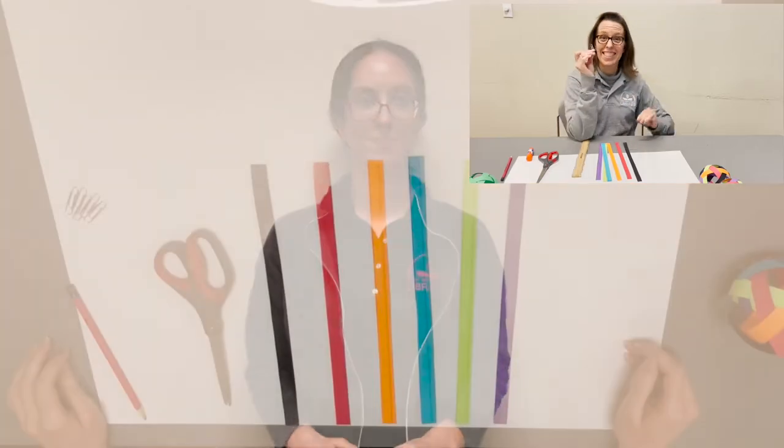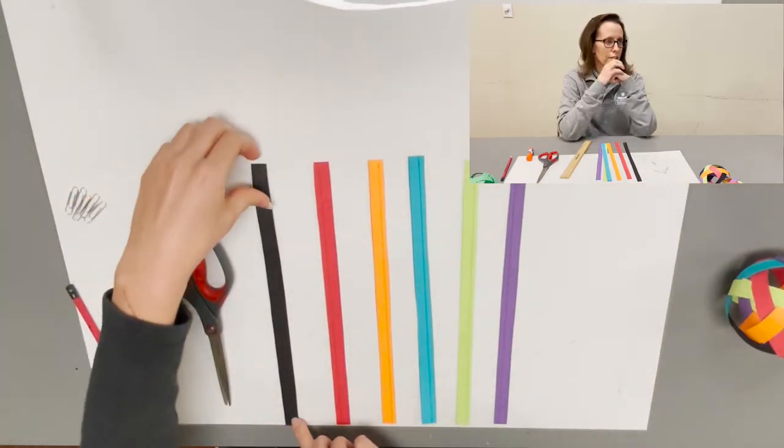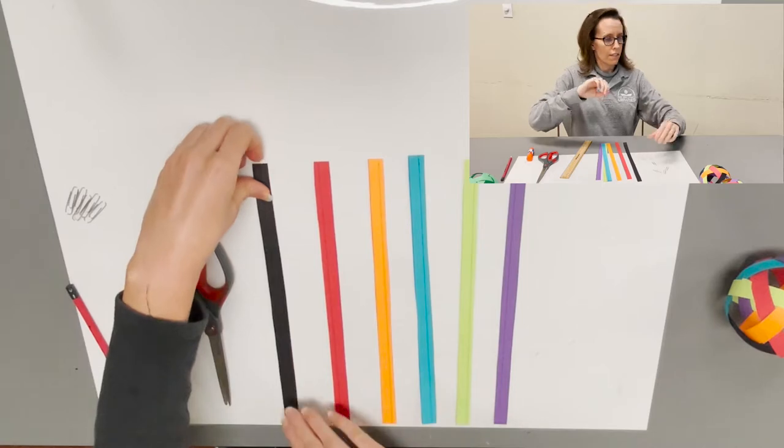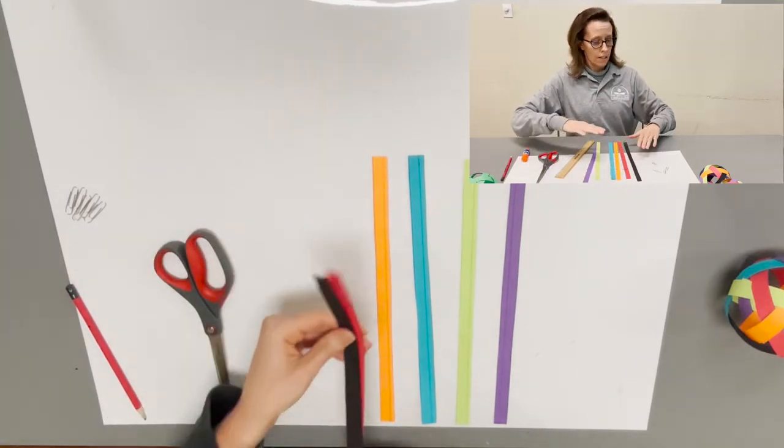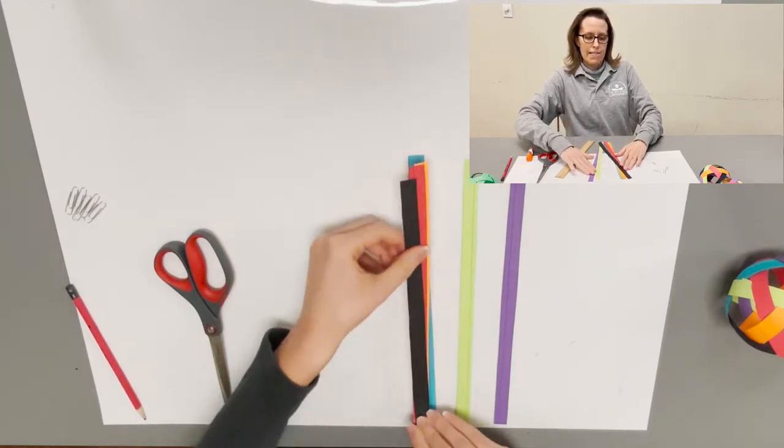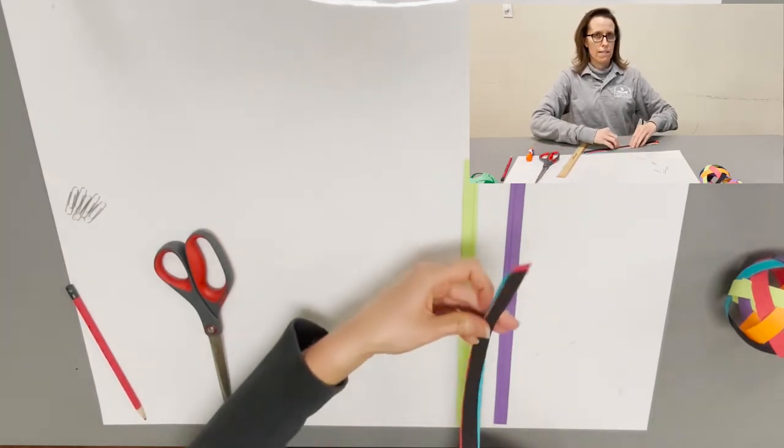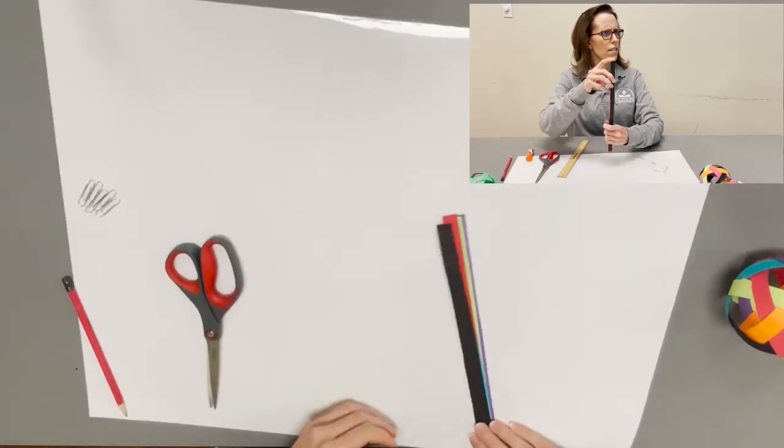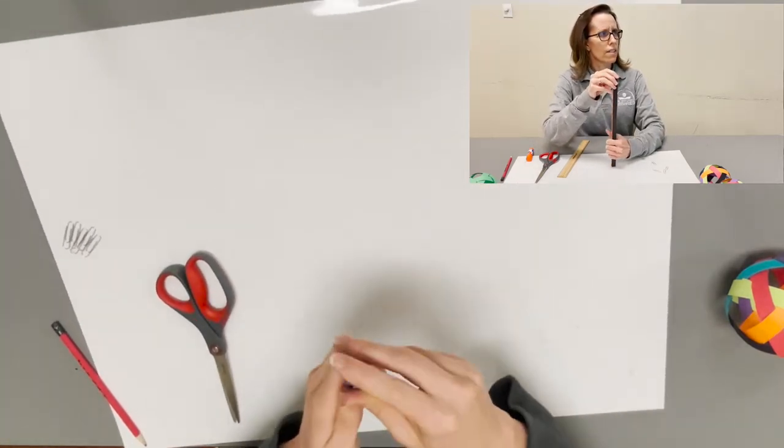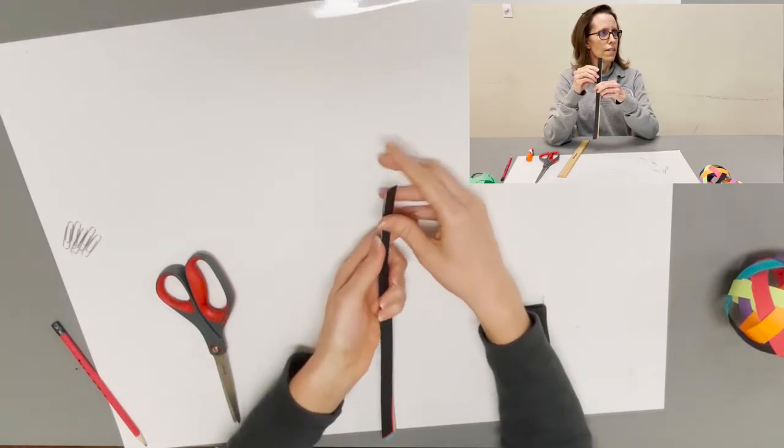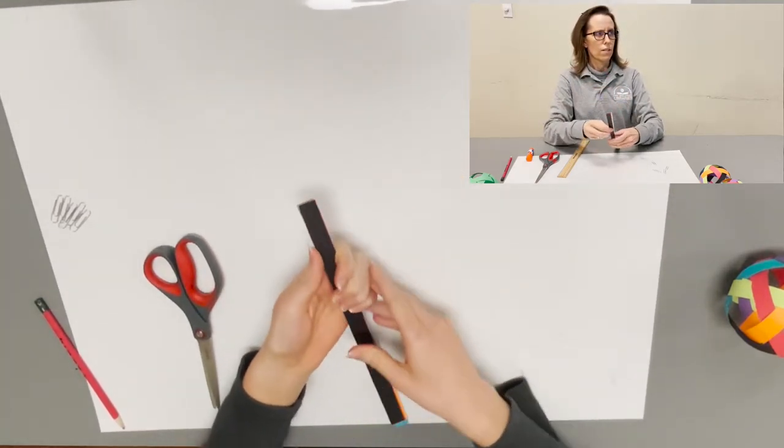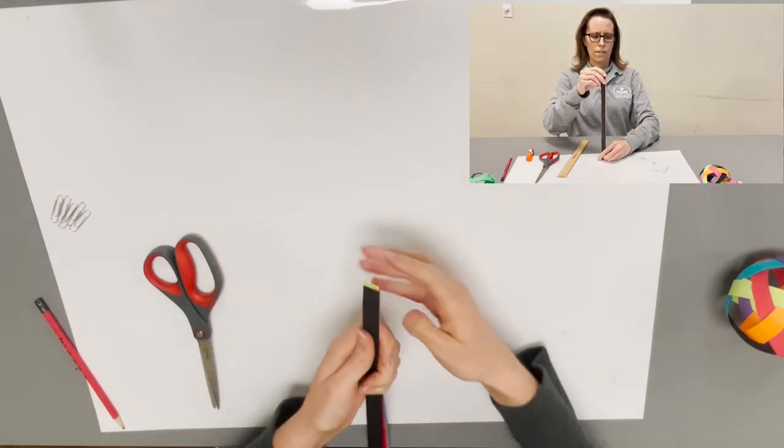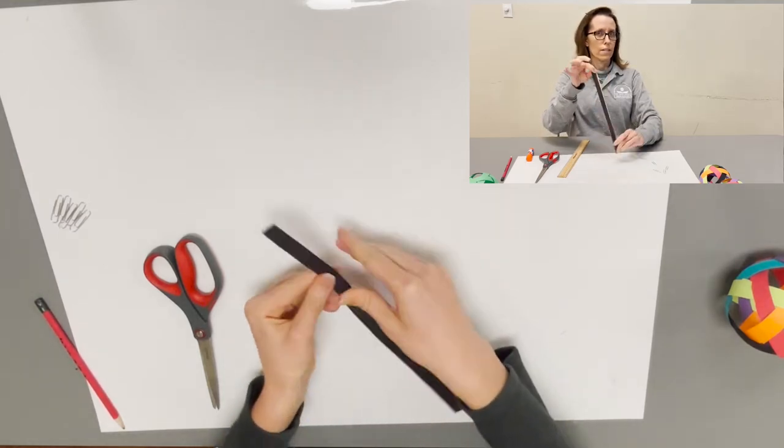To make the woven balls, you're going to start with your six strips and stack them one on top of the other. What we're going to do is cut the tabs that will eventually hold them together in your finished ball. Make sure all your ends are even.